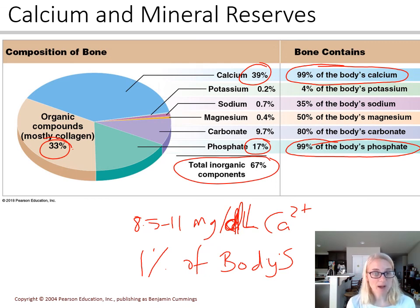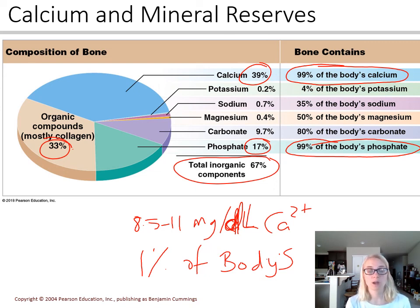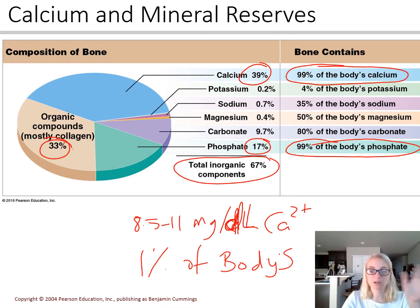That wraps up this lesson on the dynamic nature of bone and how it reacts to exercise, the PTH and calcitonin interplay to maintain blood calcium levels, and the breakdown of calcium and minerals within bone compared to that one third of bone matrix that is collagen fibers. I think we've got one more lesson on fracture repair and osteoporosis. See you next time!